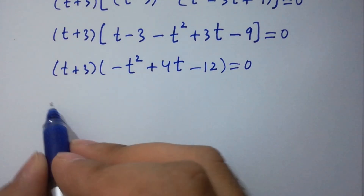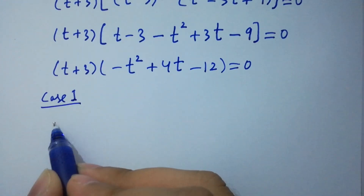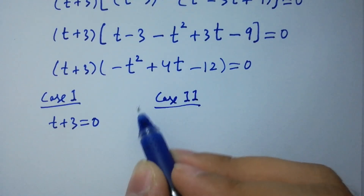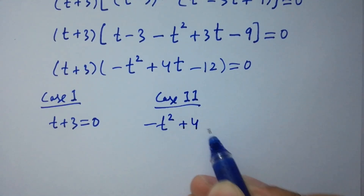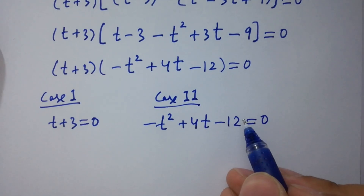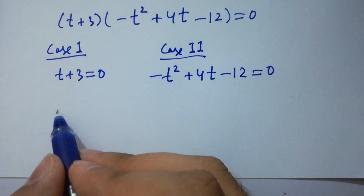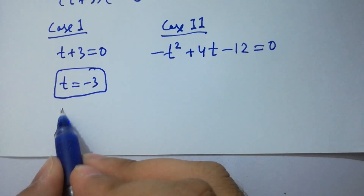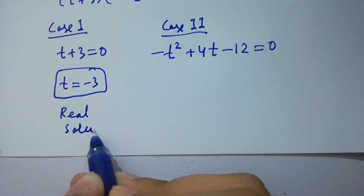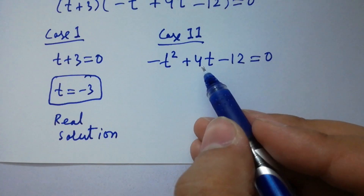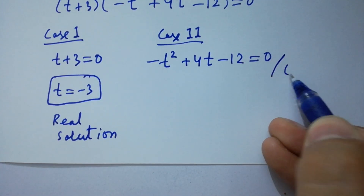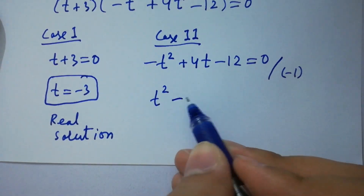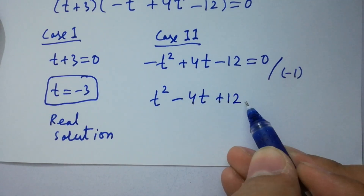We have two cases here. Case 1: t plus 3 equals 0. Case 2: negative t-squared plus 4t minus 12 equals 0. From Case 1, t equals minus 3, which is our first real solution. From Case 2, divide by minus 1 to get t-squared minus 4t plus 12 equals 0.